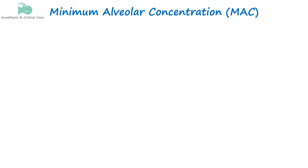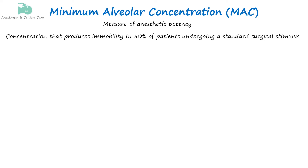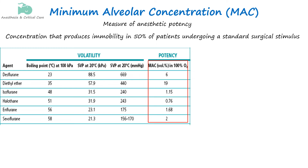The minimum alveolar concentration (MAC) is a measure of anesthetic agent potency. It is defined as the concentration that produces immobility in 50% of patients who undergo a standard surgical stimulus, measured at sea level at 760 mmHg. MAC is expressed as volume percent of alveolar gas, and a lower MAC value means that a smaller concentration of the anesthetic is needed to achieve the desired effect, making it more potent.